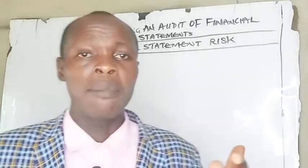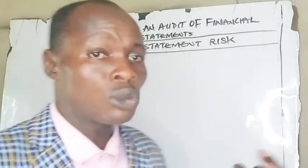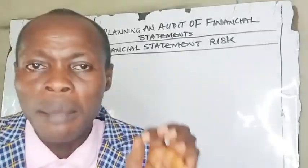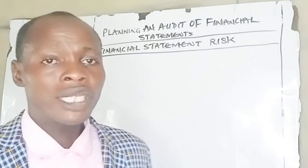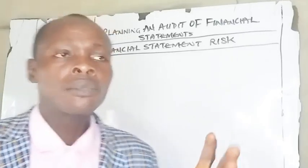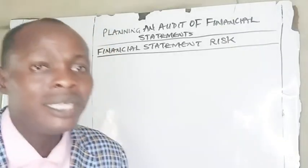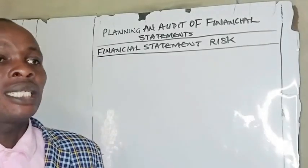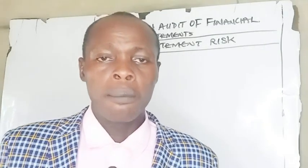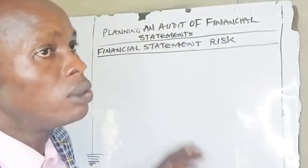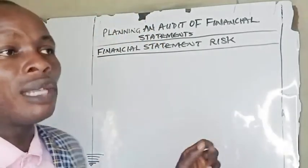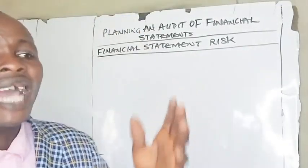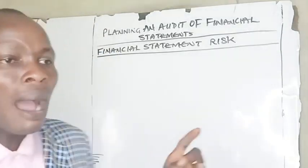In my earlier video, I examined audit risk and business risk. Business risk is the risk that threatens the ability of the business to achieve its objectives — which is usually stated as the objective of maximizing profit or maximizing shareholders' worth. Business risk is also the risk that the going-concern status of the business might be called into question.